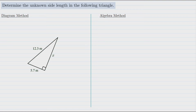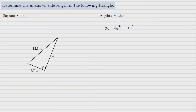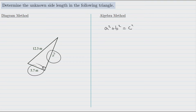This next problem looks very similar to the previous one, but this time we are not being asked to find the length of the hypotenuse — we're already told that it's 12.3 meters. Instead, we're being asked to find the length of one of the other sides, or legs, and we're told that side is called x. Starting again with the algebra method: from the Pythagorean theorem, a squared plus b squared equals c squared, and it's really important to remember c represents the hypotenuse, so c will be 12.3. I'll replace a with x, and for b I'll use 5.7. So we have x squared plus 5.7 squared equals 12.3 squared.